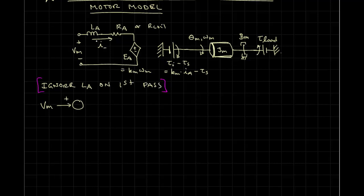So, we will have no L-A. Vm is applied to the electrical side of the motor. And we have that the armature voltage, Ea, is going to be the difference between Vm and the voltage lost. Oops, sorry, I wrote that wrong.